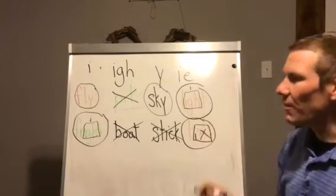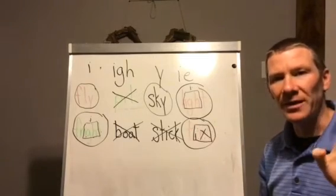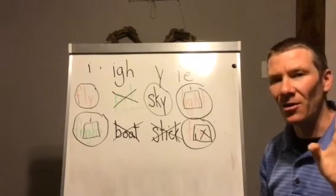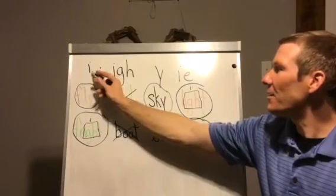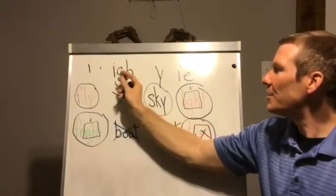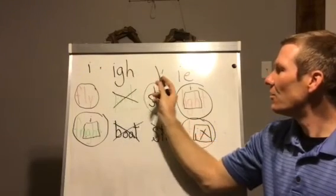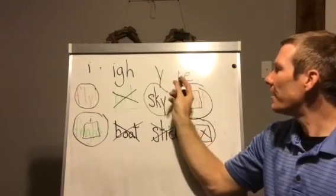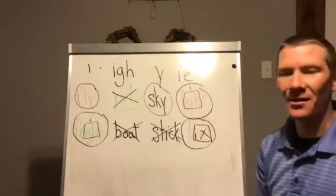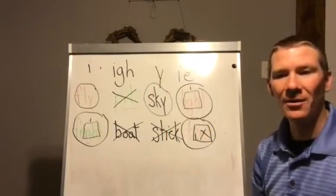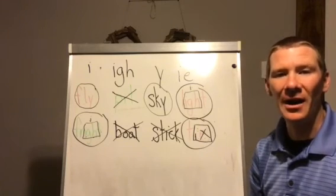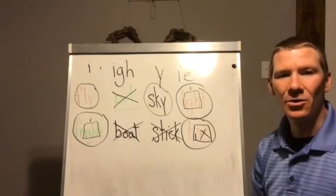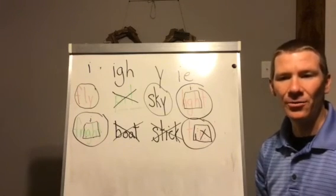So remember, you have four different ways that you can make the long I sound: I by itself, IGH, Y, and IE. They're all going to make the long I sound, which is I. Good luck today in all your work.